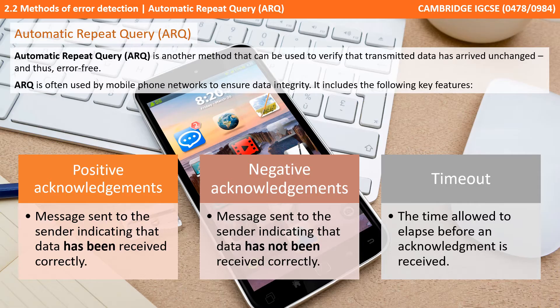ARQ is often used by mobile phone networks to ensure data integrity and it includes the following key features: positive acknowledgements — a message sent to the sender indicating that data has been received correctly; negative acknowledgements — a message sent to the sender indicating data has not been received correctly; and timeout — the time interval allowed to elapse before an acknowledgement is received.